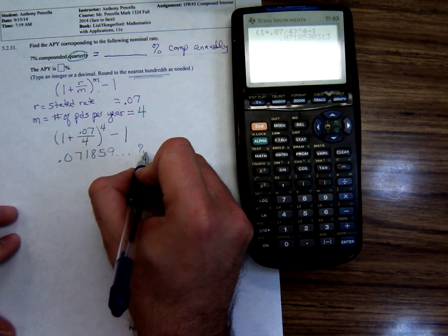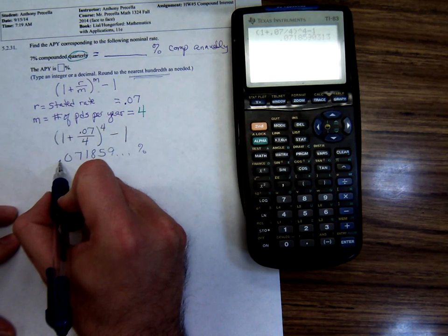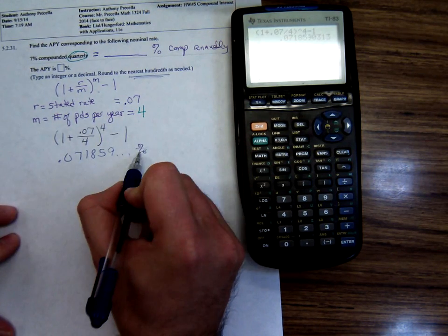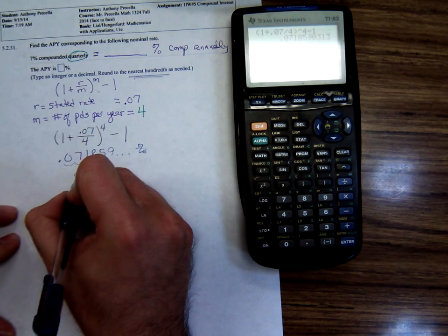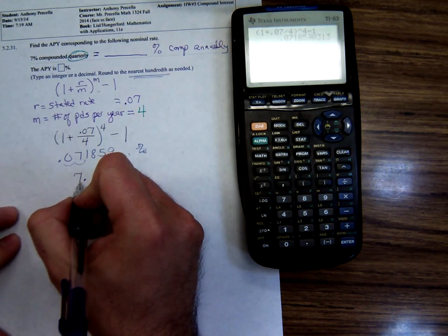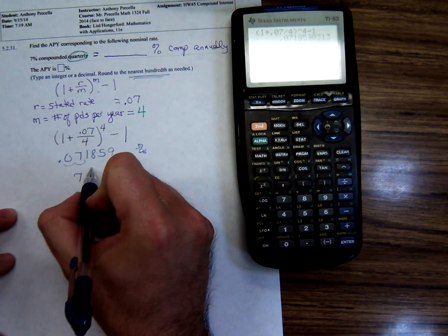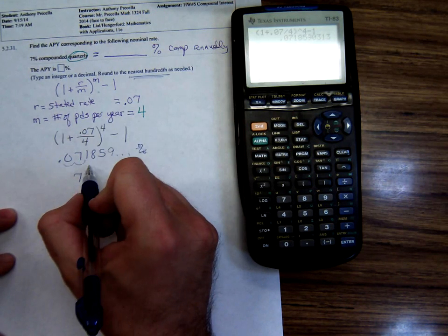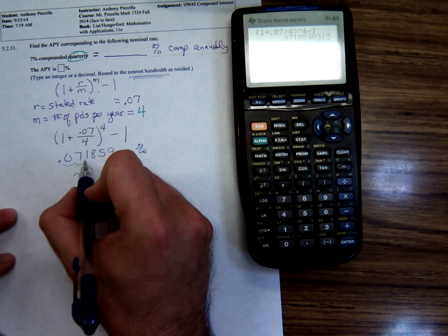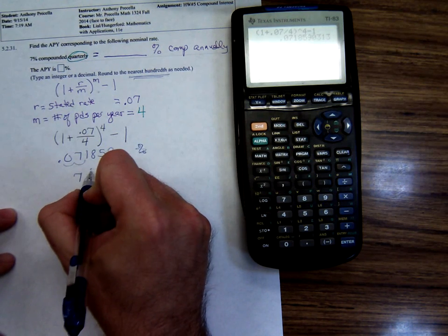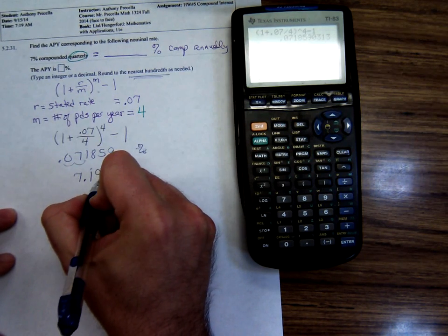We want to write this as a percentage rounded to the nearest hundredth. So let's first write it as a percent. You move the decimal point two places, that would be 7 point. Then rounding to the nearest hundredth, how many digits is that after the decimal point? Two. So 7.19%.